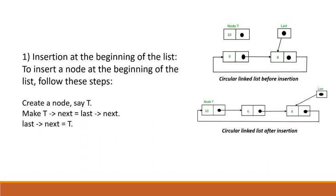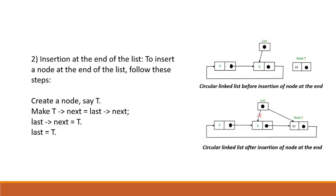For insertion at the beginning of the list, create a new node represented by T. Make T's next equal to last's next node, and then set last's next equal to T. For insertion at the end of the list, create a node T, make T's next equal to last's next, then set last's next equal to T, and finally set last equal to T.